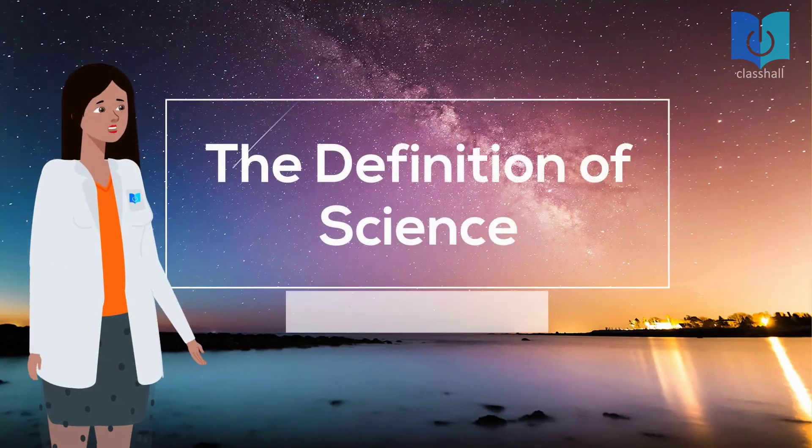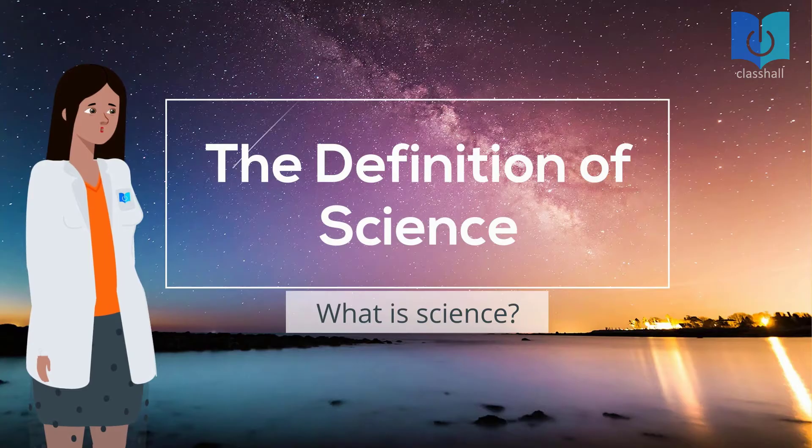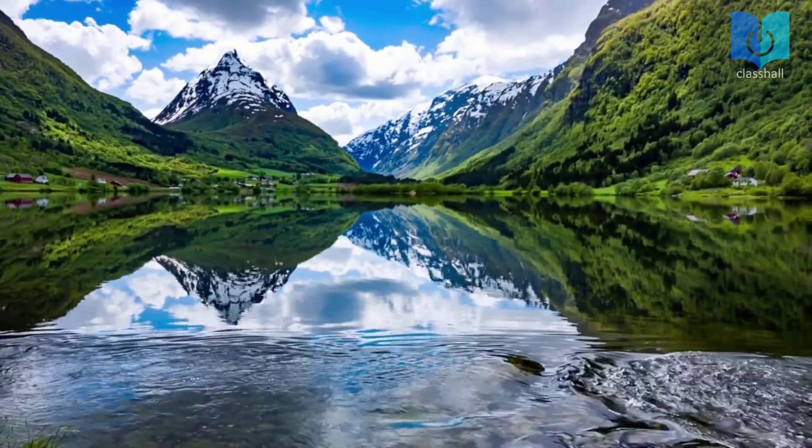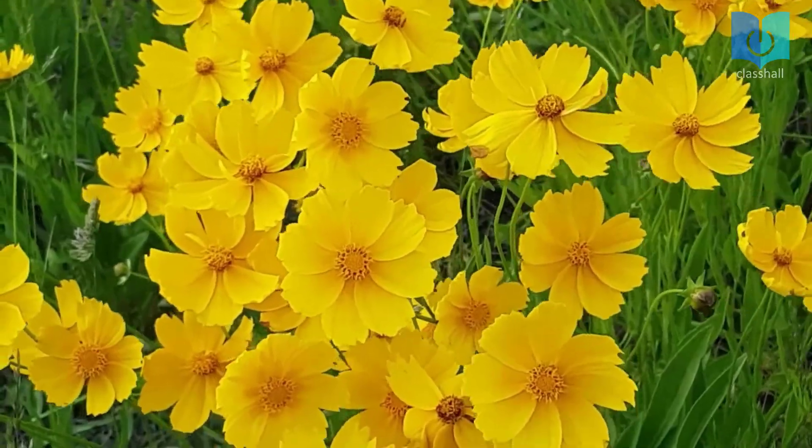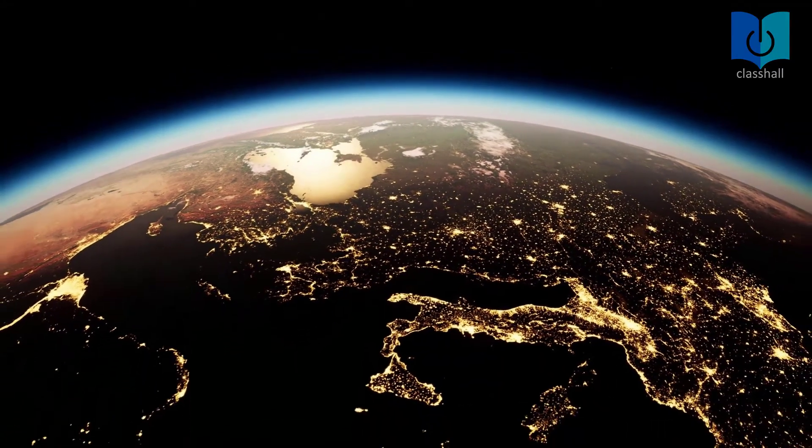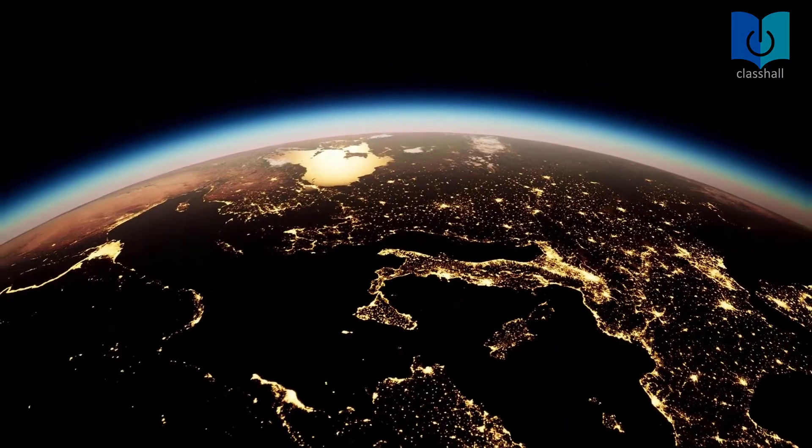Let's get started with the definition of science. Science is the systematic study of nature. This means that science is an organized way through which we learn about the world around us. Basic science is a subject that introduces sciences to mankind.